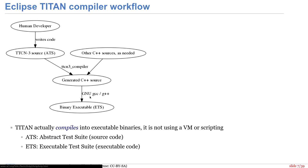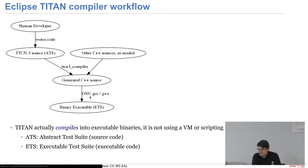Ich sehe es gern, dass meine Test-Suite ein ausführbares Programm ist und nicht in einer geskripteten Sprache läuft. Es ist eine stark typisierte Sprache, ganz im Gegenteil zu Python – unglaublich viele Probleme sind schon zur Compile-Zeit bekannt. Ich habe nicht mitten im Test auf einmal irgendwo ein unerwartetes Typproblem. Wir haben also die Abstract Test Suite, kompilieren das ganze Zeug zusammen und haben dann die Executable Test Suite, die ETS.